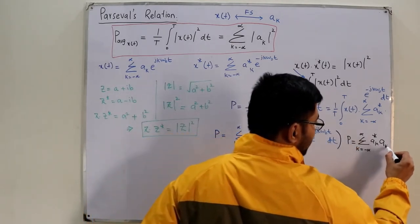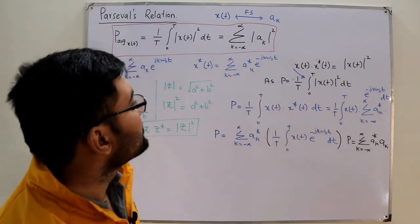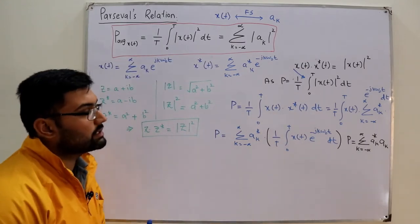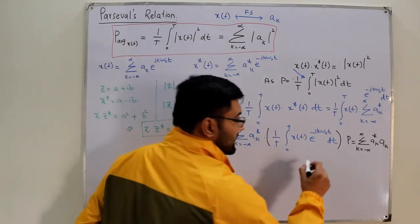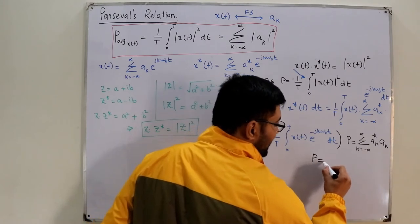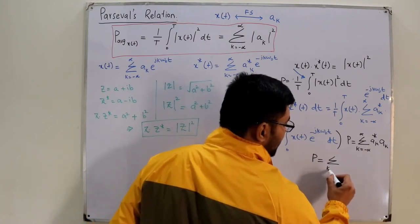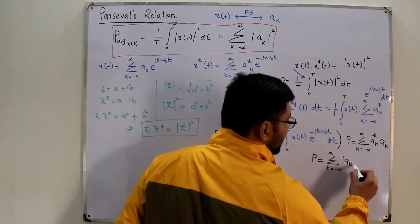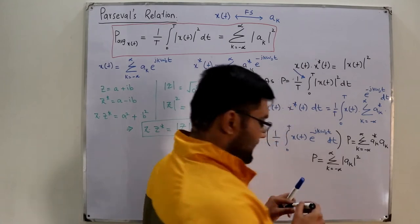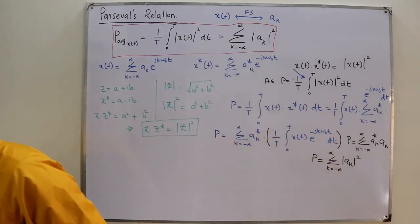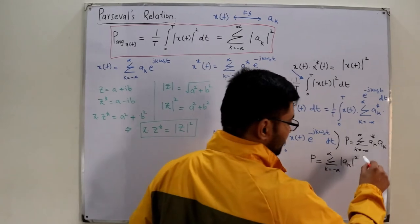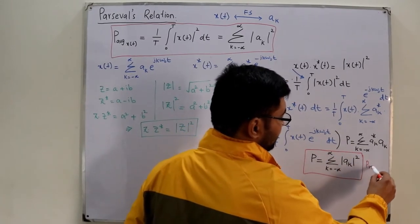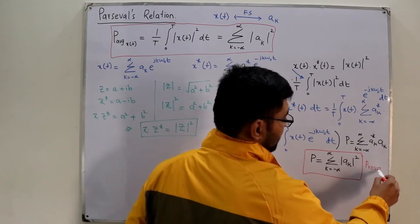So we can write that power equals summation with k from negative infinity to positive infinity of a_k* times a_k. Using the result that z·z* = |z|², we get that the power equals summation from k = −∞ to +∞ of |a_k|². This is the Parseval's relationship, and this completes the proof.